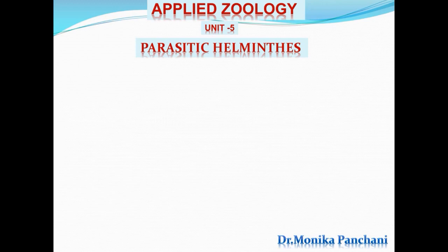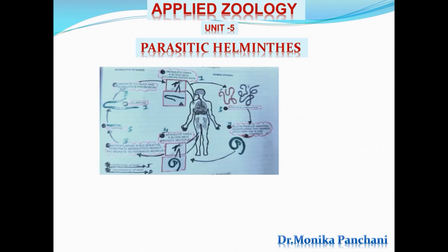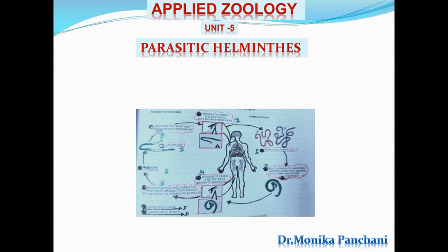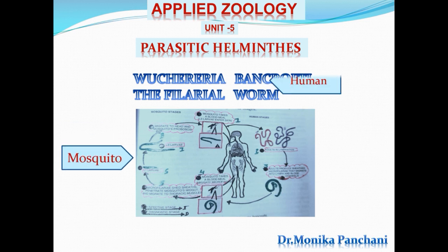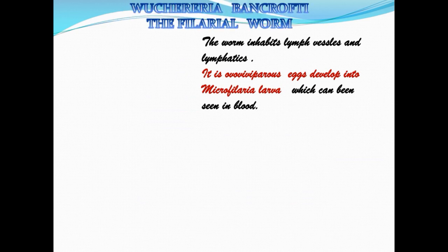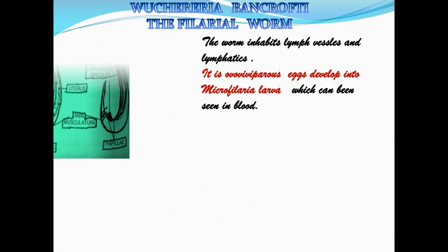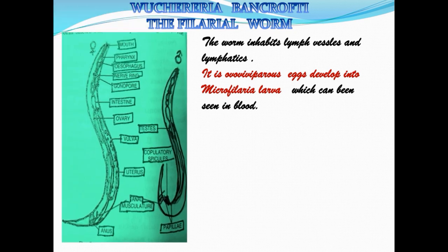Now I am going to cover the second parasitic helminth. The second helminth is Wuchereria bancrofti, also named as the filarial worm. It has two hosts: mosquito and human being. The worm inhabits the lymph vessels and lymphatics.